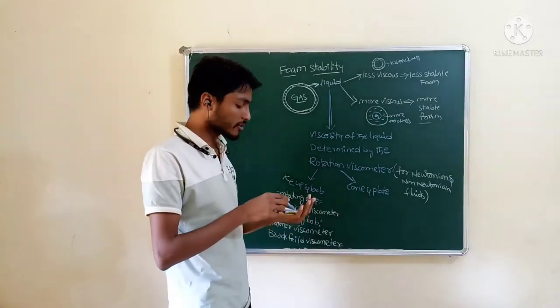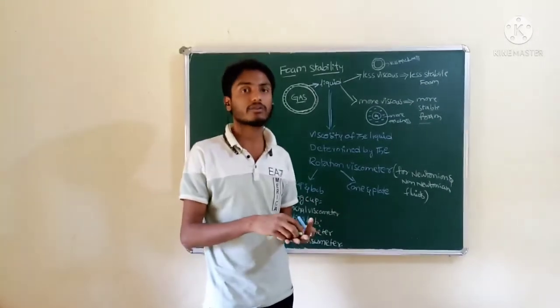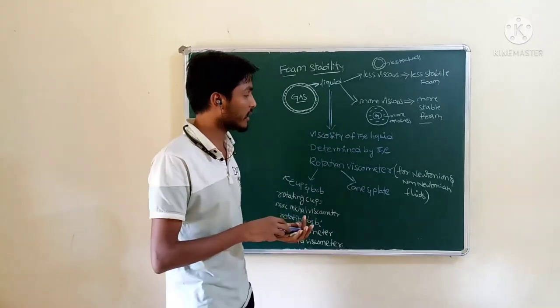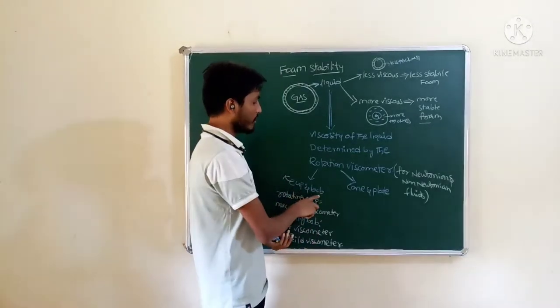Okay? Rotational viscometers, we can use for both Newtonian and non-Newtonian fluids. Cup and Bob and Conan plate.